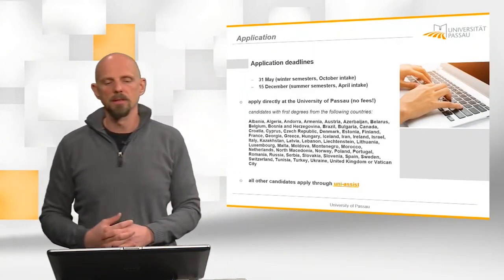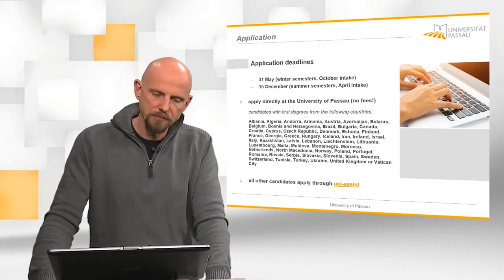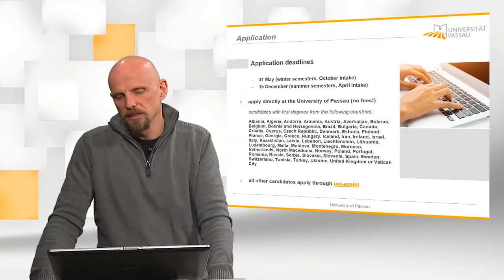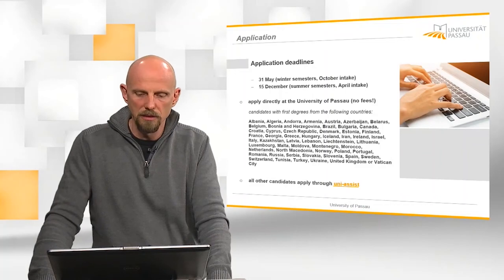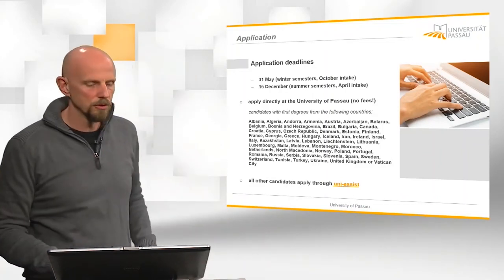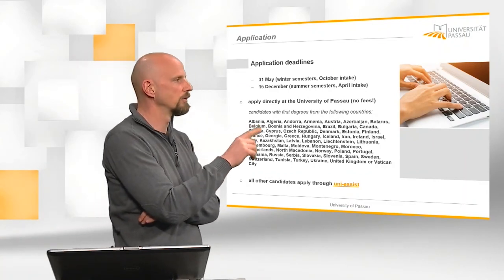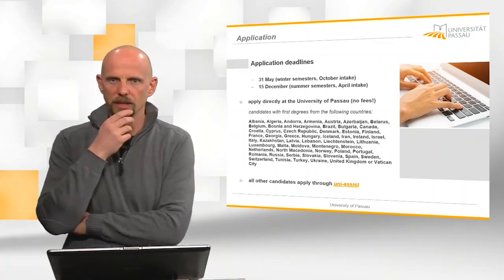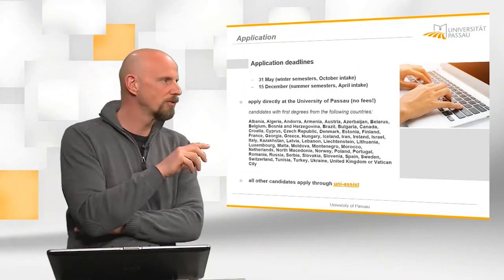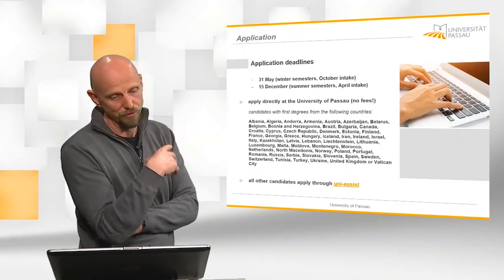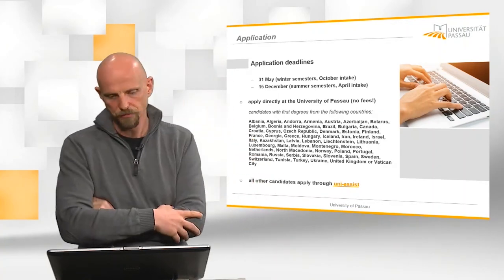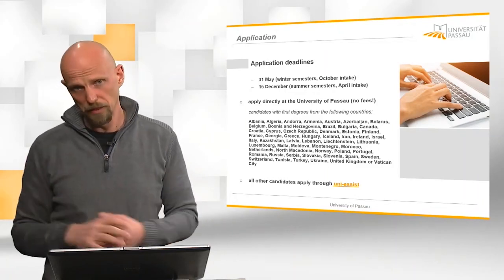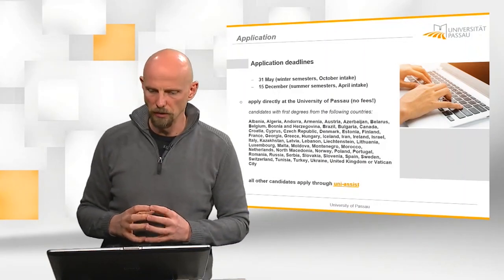So how can you apply? Application deadlines are 31st May for winter semesters, that means October intake, or 15th of December for summer semester, that means April intake. For certain countries, if you have your first degree in one of the following countries here, and I won't read them out loud because you can read them yourself, then you can apply directly at the university. That means there are no fees. Or for other candidates, which are not from one of those countries, or of course also not from Germany, you can apply through UniAssist, which is a German-wide organization. And so you cannot only apply via UniAssist for Passau, but also for other universities, although you have to pay a small administration fee.